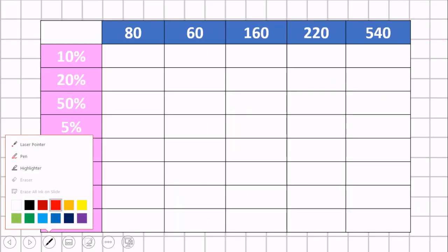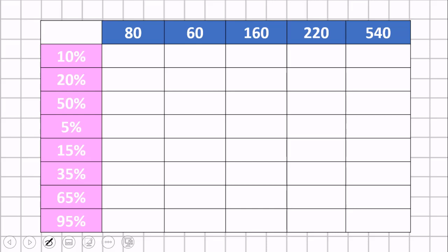So using that information, I'm going to get you to fill this grid in. I'm going to do 80 first, and then what I'd like you to do is to do 60, 160, 220, and then 540. So we already know that 10% of 80 is 8. 20%, well, we know 10% is 8, so 20% must be double 8, so that would be 16. 50%, well, that's just half of 80, which is 40. Another way we could have done it is we know that this is 10, and what we can do is just times it by 5.